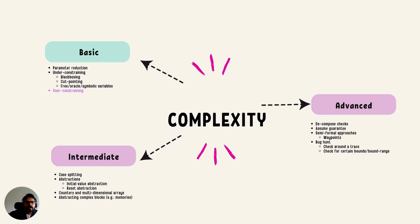The intermediate techniques include case splitting, abstractions, and abstracting out various memories, counters, and reset abstraction. If none of these basic and intermediate techniques are really reducing the complexity — and you still see proofs not going beyond certain bounds even after days of running your formal tools — you do have many advanced techniques at your disposal. For example, you can decompose checks, use assume-guarantee contracts, or combine dynamic verification with formal in what's called semi-formal verification. There's also an emerging technique called bug hunt. We'll discuss those in coming sessions.